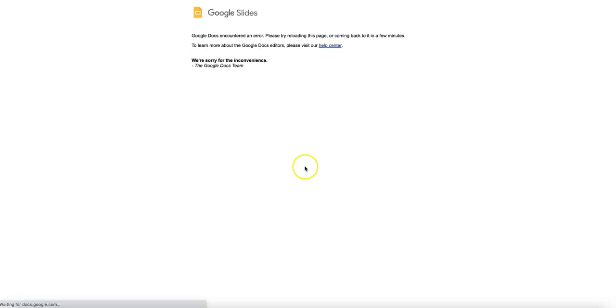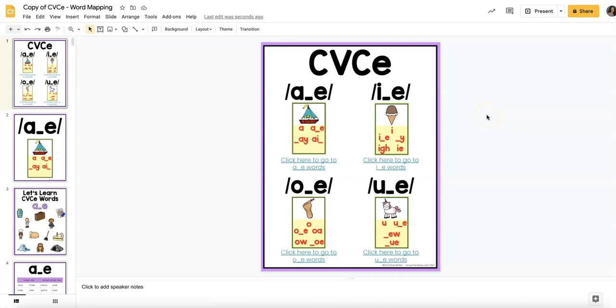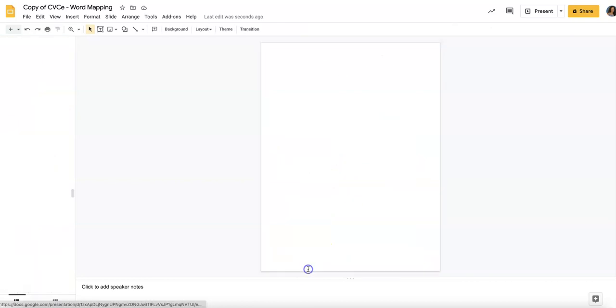It's taking a while to load. Okay, so I've made a copy of this. First thing you will do is just change the name so that you have a master copy in here. You can click a link right here and it'll take you right to the slide that you want to work on. So let's say that we're working on long O words.